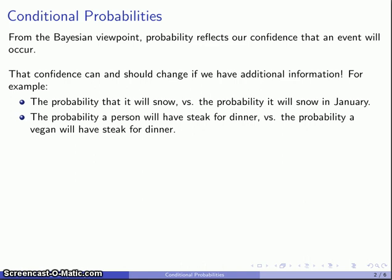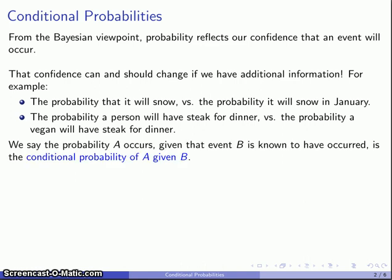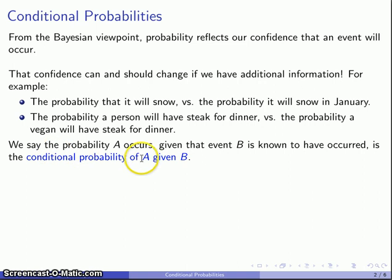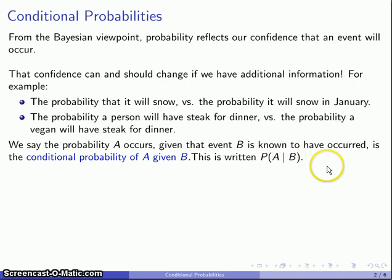What we want to do is break our event into two components. We'll say that the probability that an event A occurs, given that another event B is known to have occurred, we're going to call that the conditional probability of A given B. This is written as the probability of A given that B is known to have occurred.